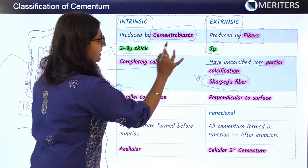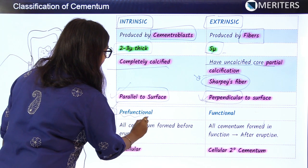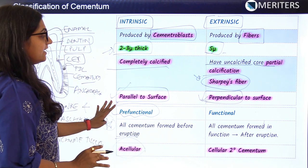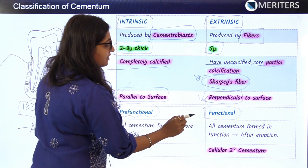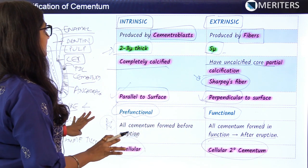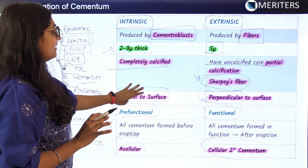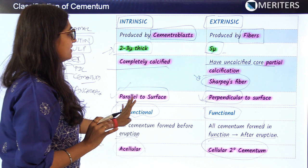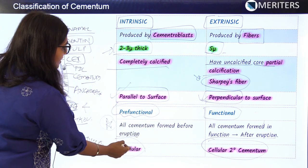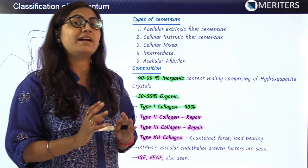In terms of direction, intrinsic fibers are parallel to the surface, whereas extrinsic fibers are perpendicular to the surface. Functionally, intrinsic cementum is pre-functional — all cementum formed before eruption — and is acellular in nature. Extrinsic cementum is functional — all cementum formed after eruption — and is secondary cementum. So pre-functional equals acellular cementum, and functional equals cellular or secondary cementum.